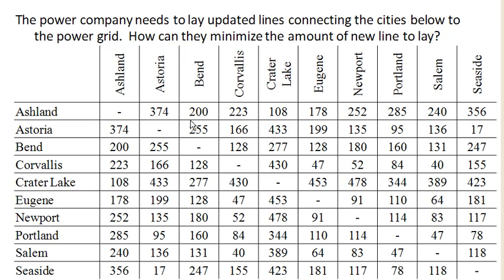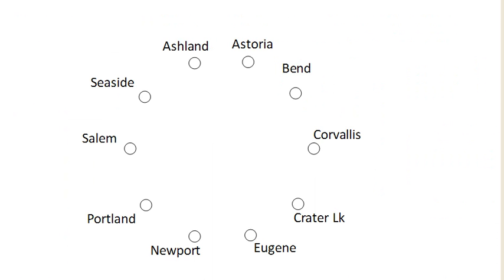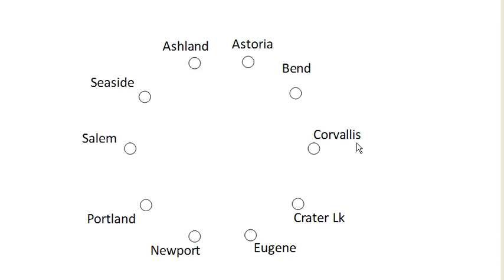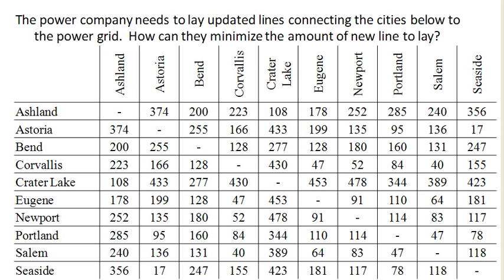For simplicity, I went ahead and created a little ring graph of the cities. This is in no way representative of their actual locations, but it'll help me draw a graph. I'm going to start here with my cheapest edge, Seaside to Astoria.